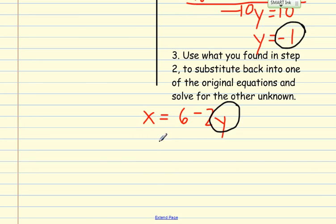So wherever there's a y in my equation, I'm going to leave a blank. And I know I'll fill that in with negative 1. So x equals 6 minus, multiplication first, negative 2 times negative 1 is a positive 2. So x equals 8.